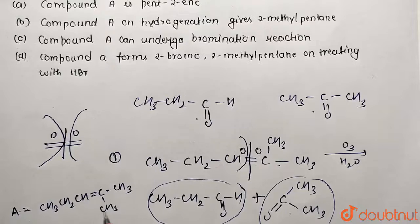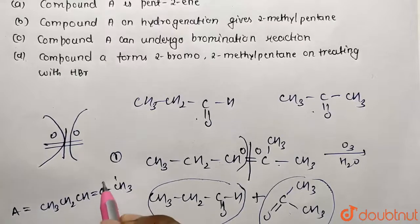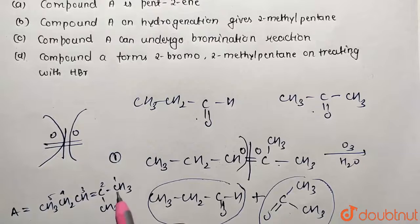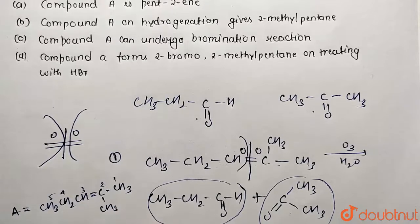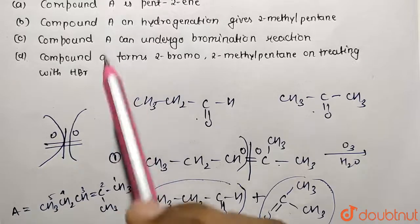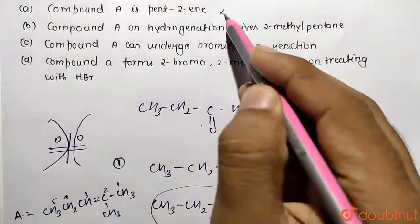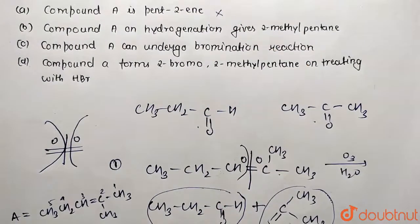Now if you write the IUPAC name for this given compound, how are you going to do? One, two, three, four, five. What is its name? It's going to be 2-methyl-pent-2-ene, but what they have given? They are saying the name of compound is pent-2-ene only.